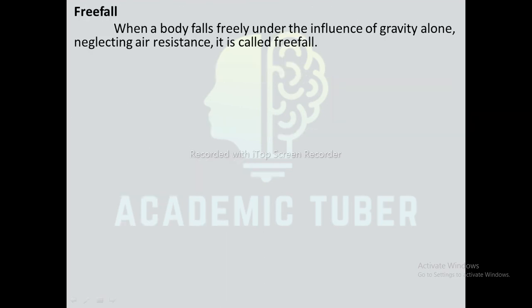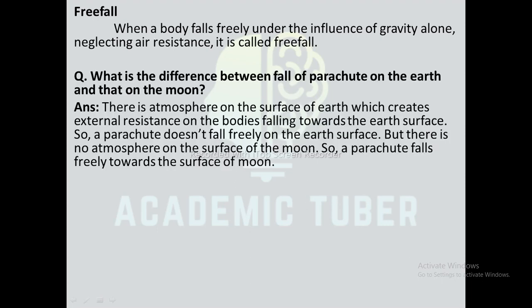Free fall: when a body falls freely under the influence of gravity alone, neglecting air resistance, it is called free fall. In other words, if a body is falling with acceleration equal to acceleration due to gravity (a = g), it is in free fall. A body falling in vacuum or in space is in real free fall, influenced by gravity only. Difference between parachute on Earth and Moon: on Earth, atmosphere creates air resistance so a parachute does not fall freely, but there is no atmosphere on the Moon, so a parachute falls freely on the Moon's surface.